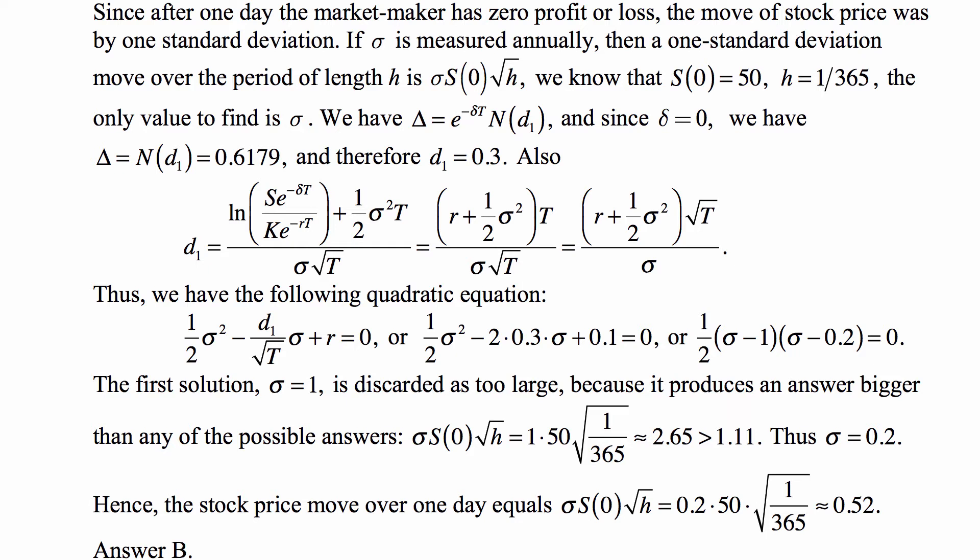If sigma, the standard deviation of the continuously compounded rate of return, is measured annually because we use the annual rate of return, it's continuously compounded, but the unit period of time is a year. So sigma is also measured annually. Then a one standard deviation move over a period of length h is sigma times S(0), the standard deviation times the price of the stock, times the square root of h.